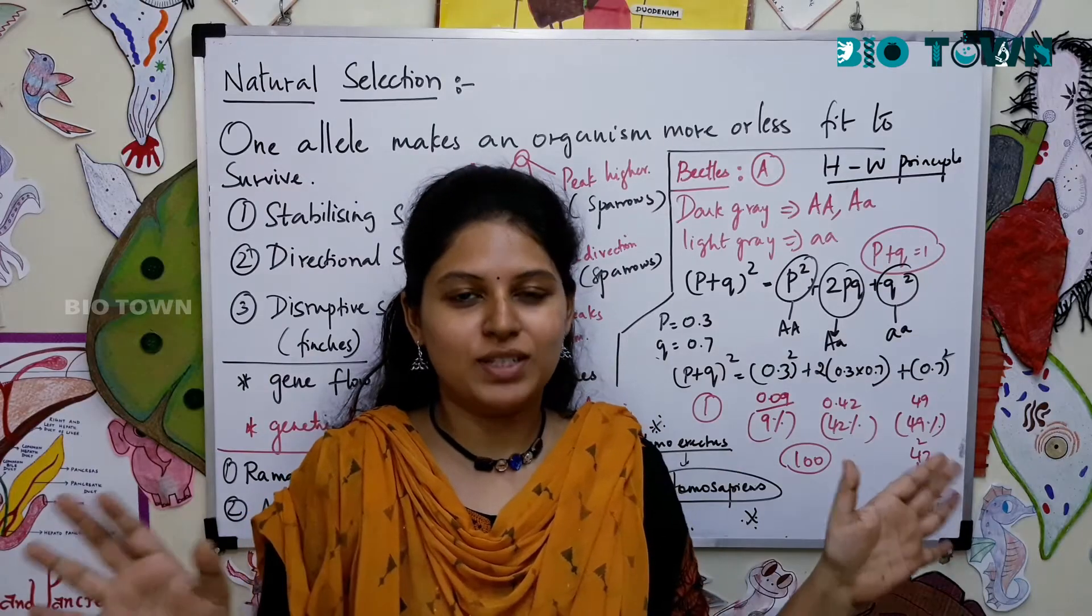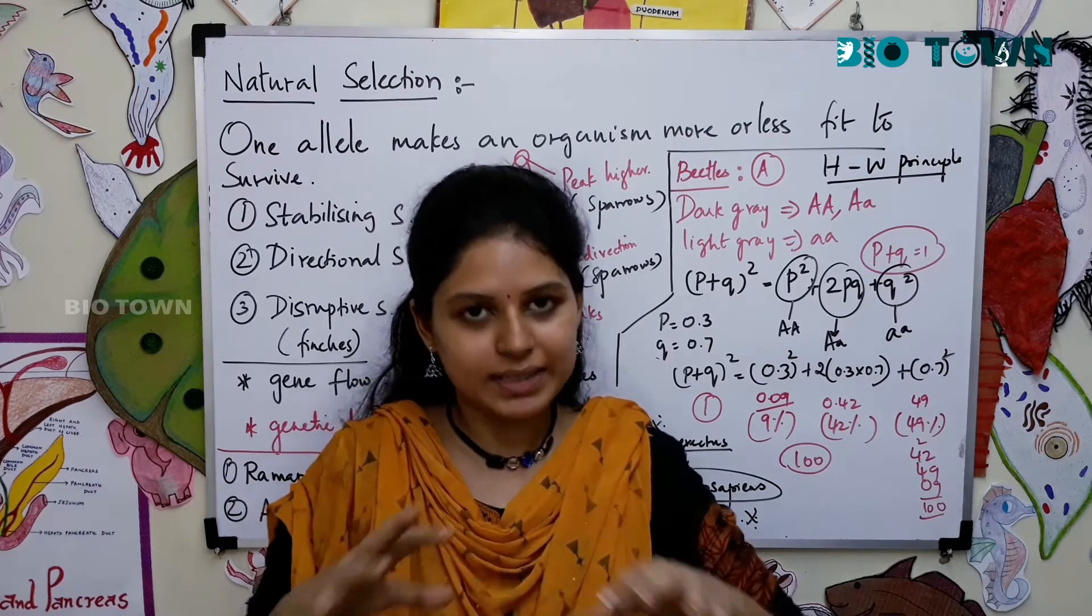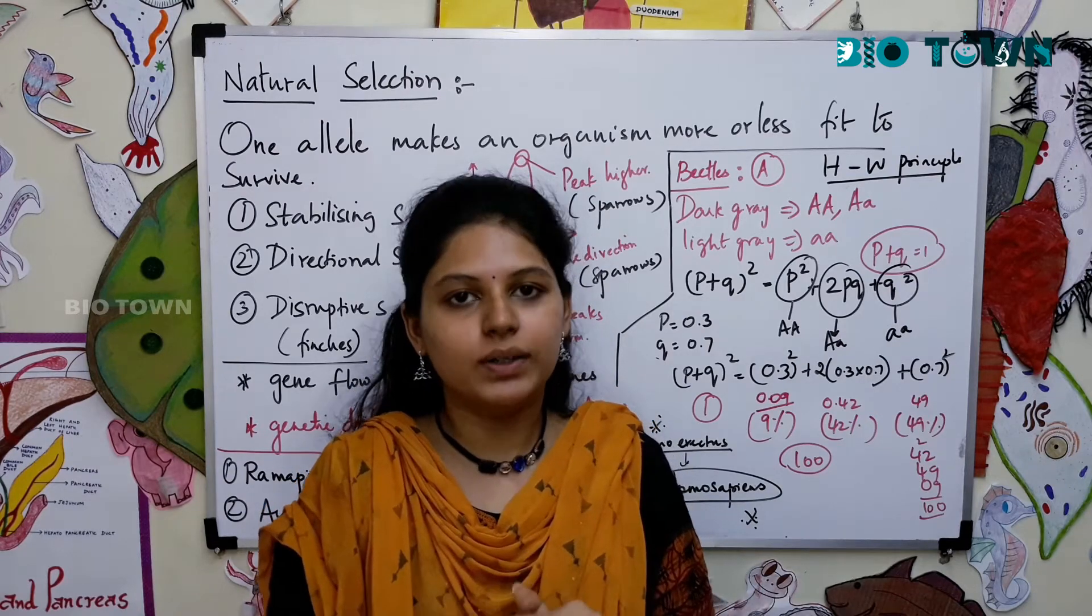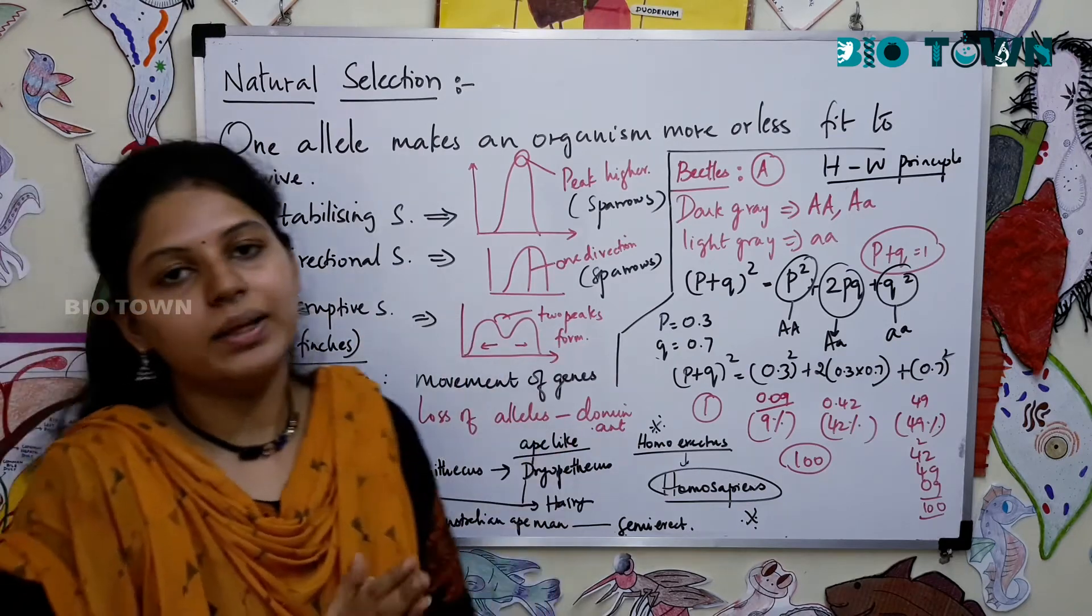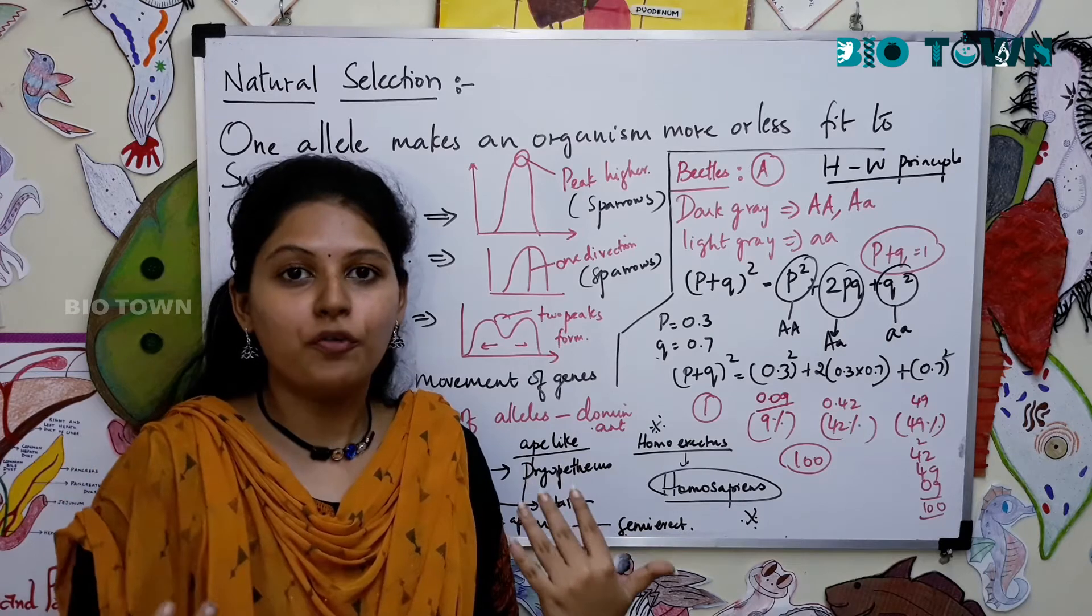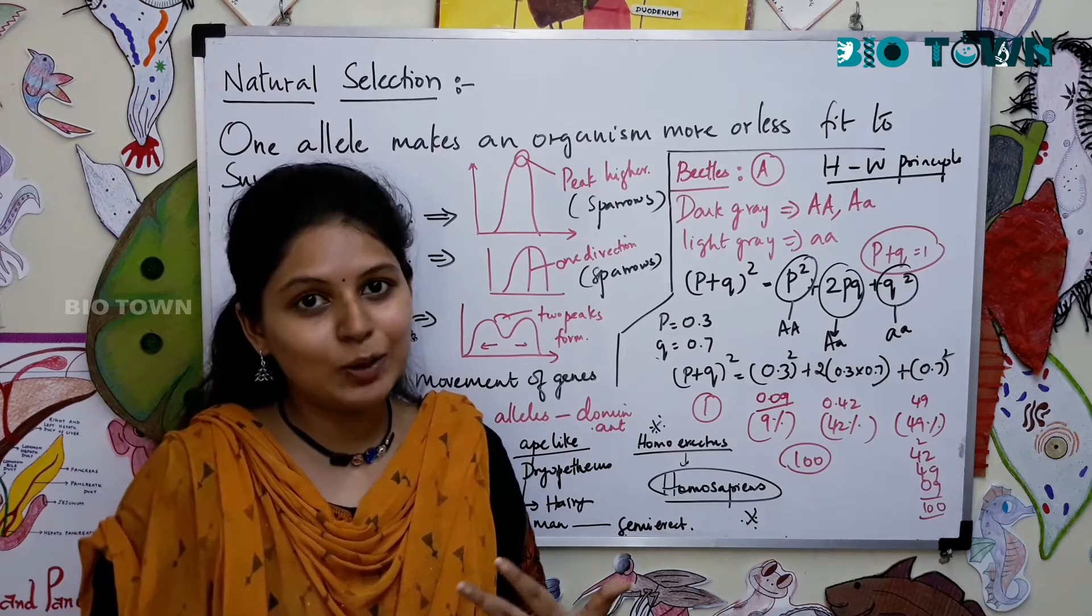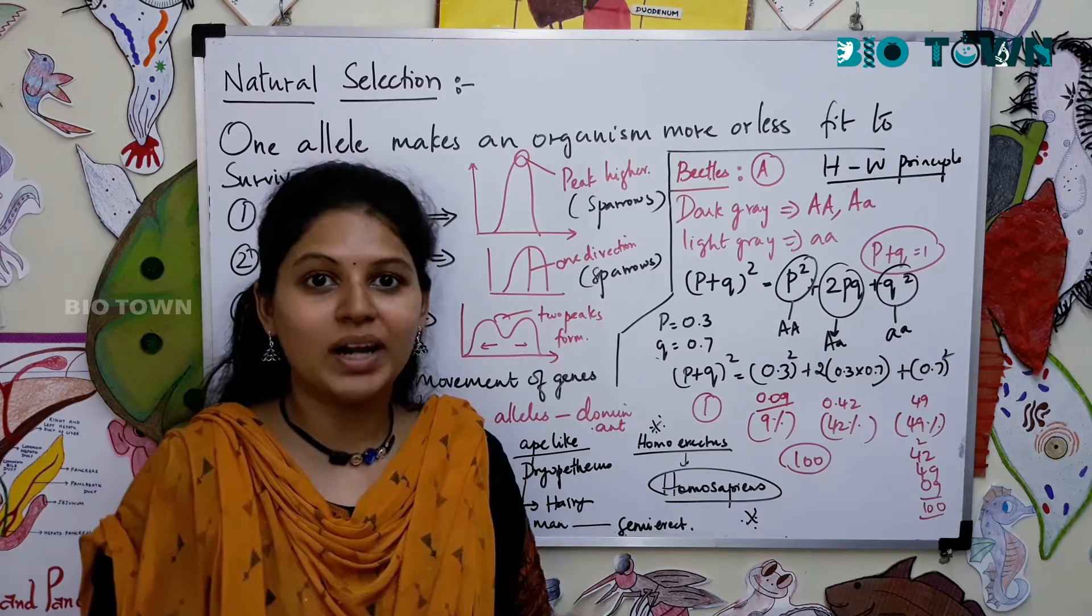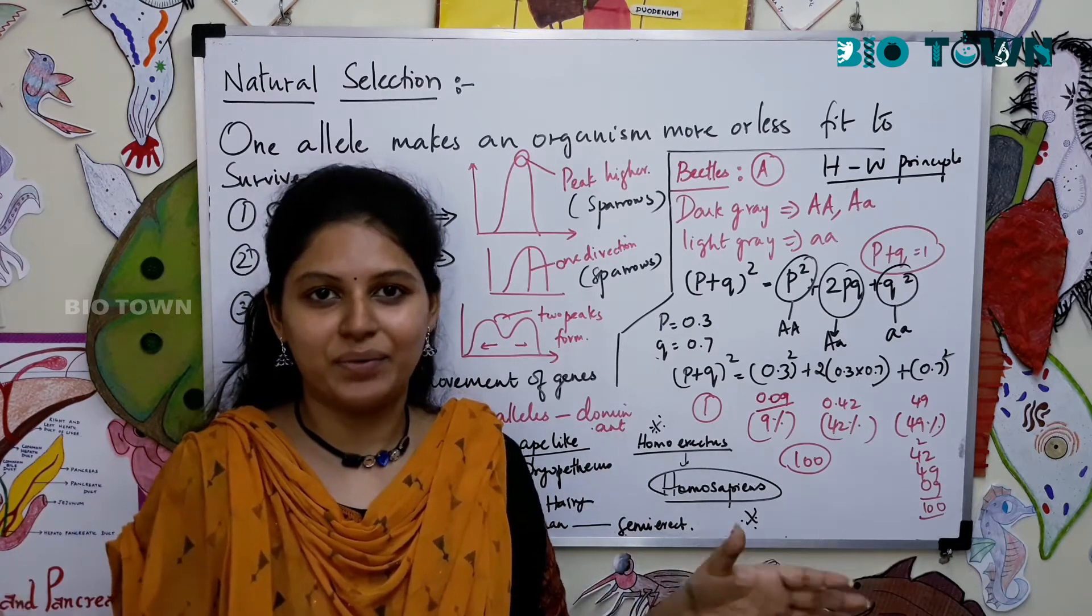Hello friends, we have almost come to the end of the chapter. Towards the end we will talk about natural selection, Hardy-Weinberg's principle, and then the evolution of man, right from Ramapithecus, Australopithecus, we had Hominoid, then Homo erectus, Homo sapiens, all this we are going to discuss.